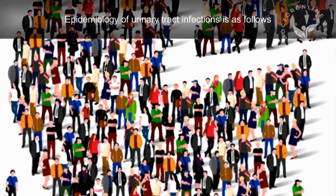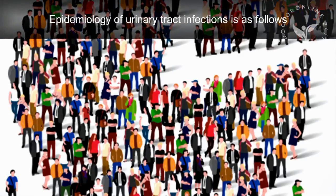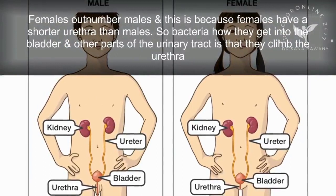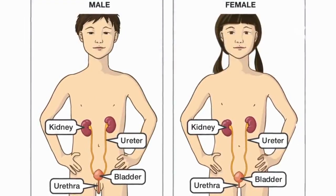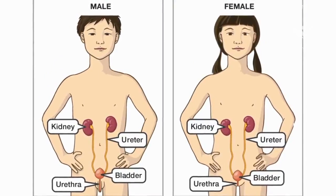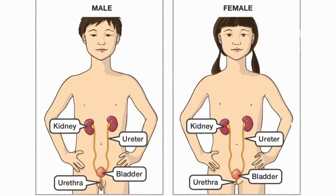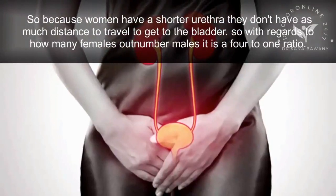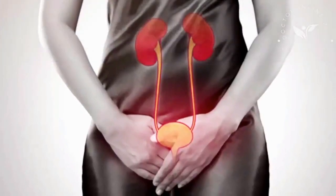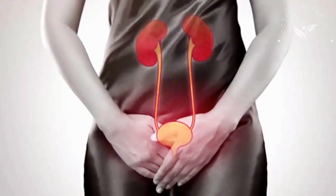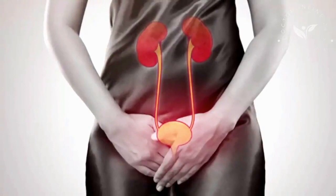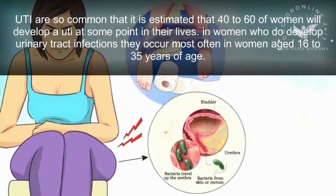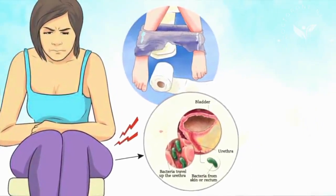The epidemiology of urinary tract infections is as follows: females outnumber males because females have a shorter urethra. Bacteria get into the bladder by climbing the urethra, so because women have a shorter urethra, bacteria don't have as far to travel. Females outnumber males in a 4 to 1 ratio, and it is estimated that 40 to 60% of women will develop a UTI at some point in their lives.